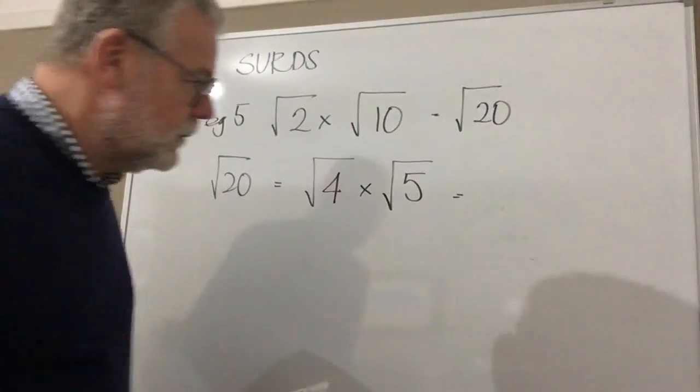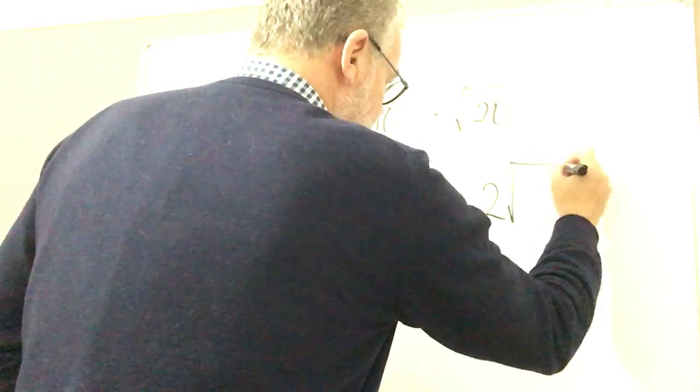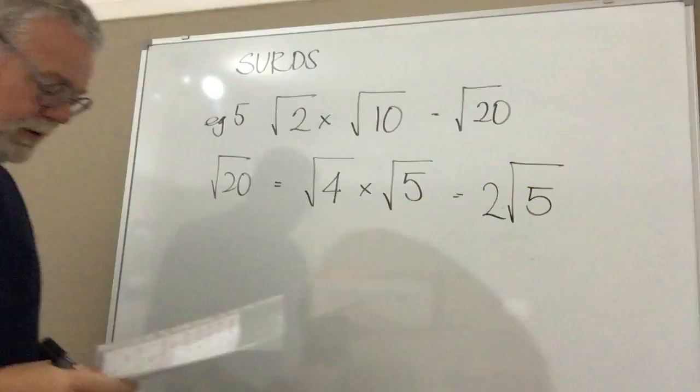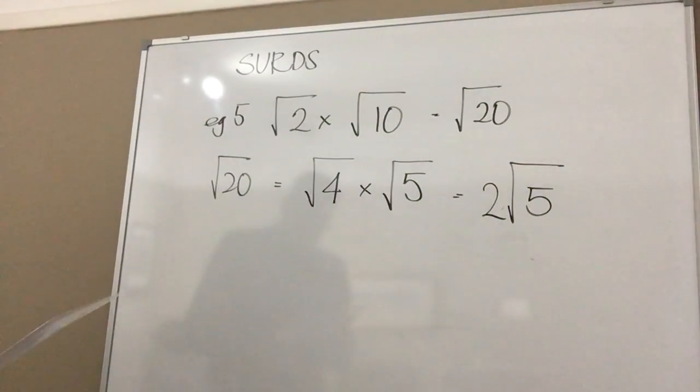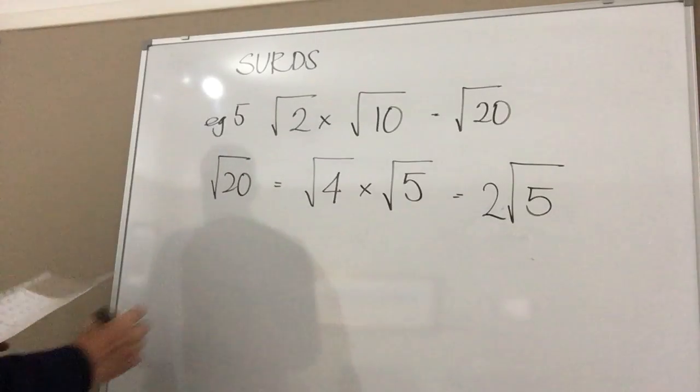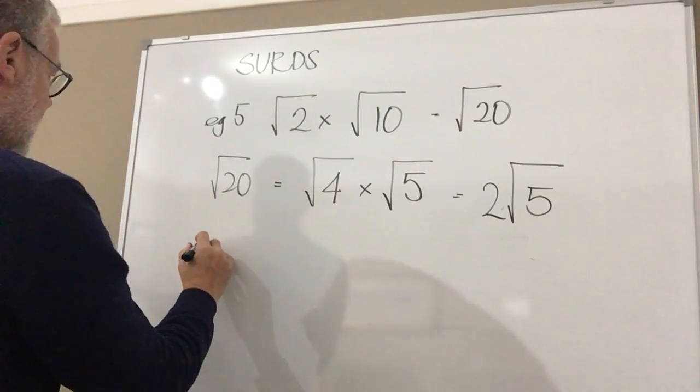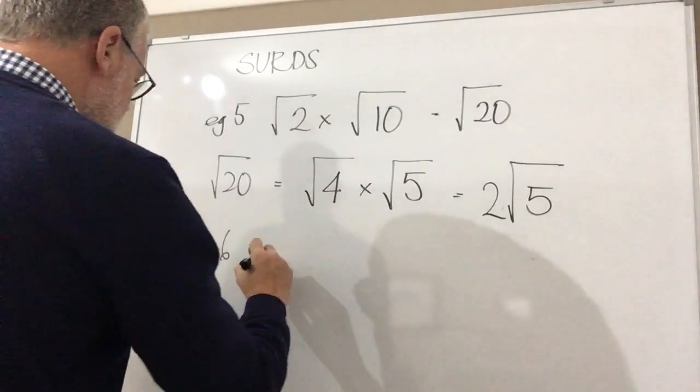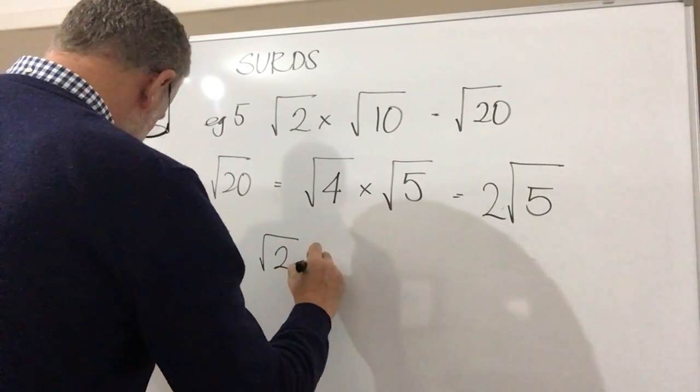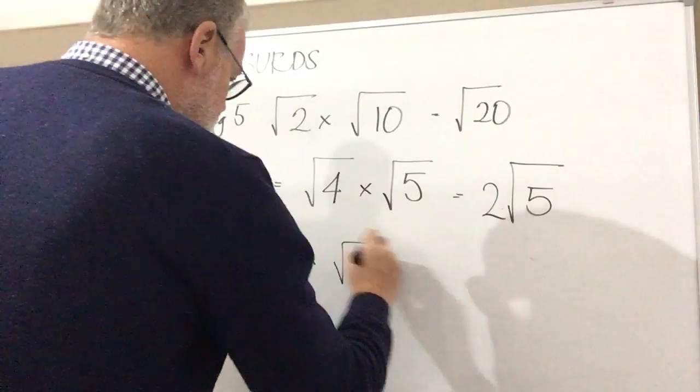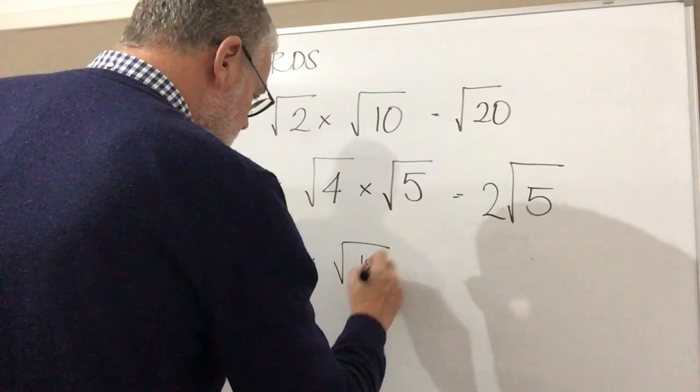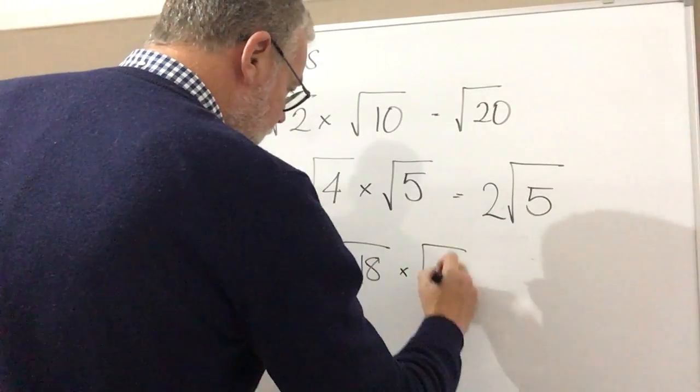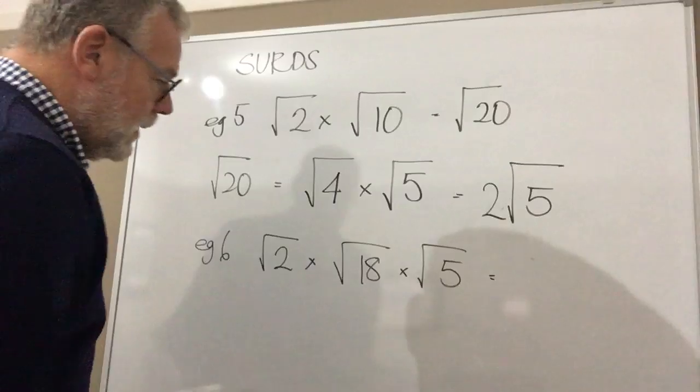We put that on the outside of the root here, so actually it simplifies to 2 root 5. Okay, right, one last example. Let's just say we were looking at something like this, so this time it would be root 2 times by root 18 times by root 5.